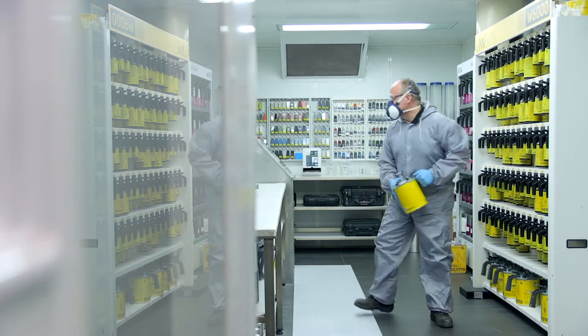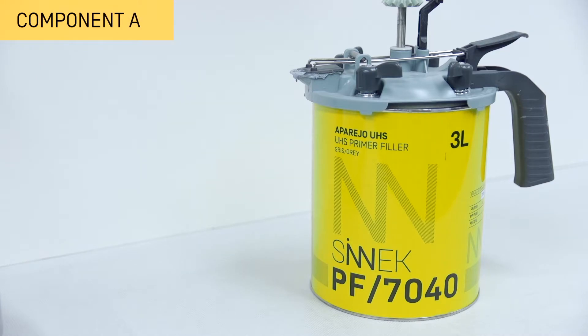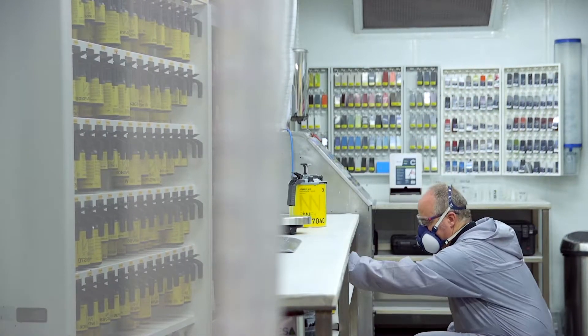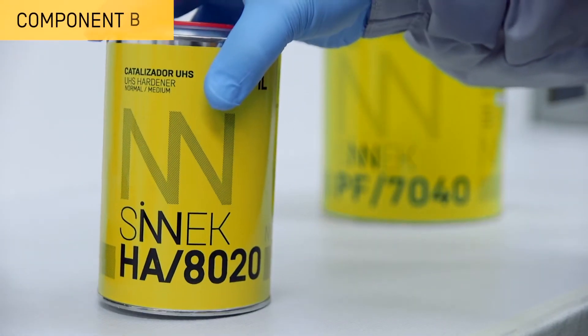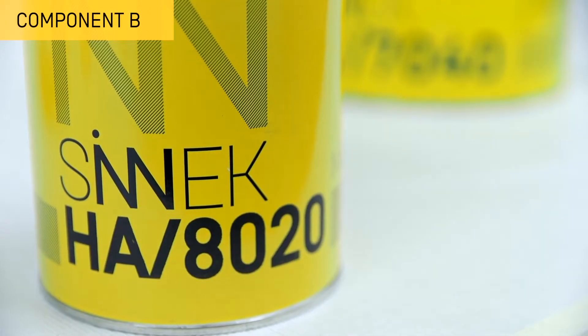2K paints are composed of Component A, which will define the type and characteristics of the final paint, and Component B, the hardener, which will cause the chemical hardening reaction without which component A will not dry out.